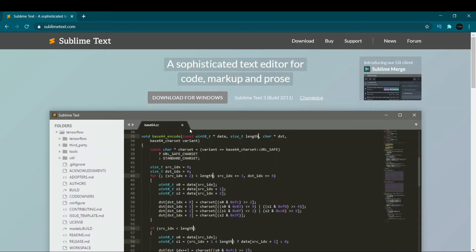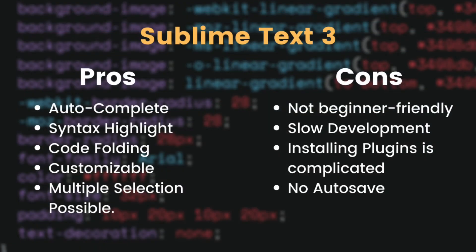The pros of Sublime Text: first, auto-completion — it automatically detects what you want to type and gives you options to save time. Second, code folding — you can divide your code into segments and close one to focus on another. Third, fast startup speed. Fourth, it is customizable — you can make it look however you want. Fifth, you can open multiple sections at the same time and code in both. Sixth, syntax highlighting.